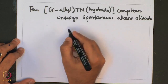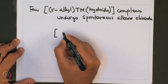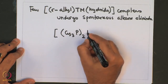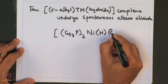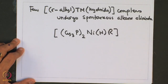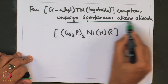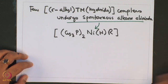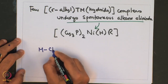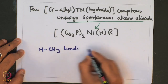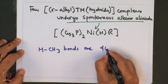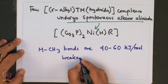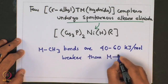For example, this biscyclohexylphosphine nickel hydride alkyl complex spontaneously undergoes alkyl elimination, meaning that this complex is very unstable. In hindsight, the metal-carbon bond in methyl moieties is generally 40 to 60 kilojoules per mole weaker than metal-hydrogen bonds.